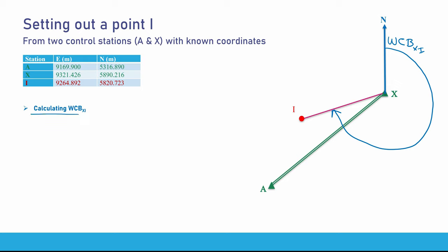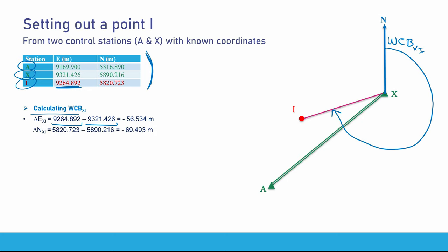To calculate the whole circle bearing between any two stations, you first calculate the change in easting. In this case, the change in easting for XI is the easting of I minus the easting of X. From the table we have all coordinates of A, X and I. That gives us minus 56.534. The change in northing for XI is the northing of I minus the northing of X, which I calculated to be minus 69.493.